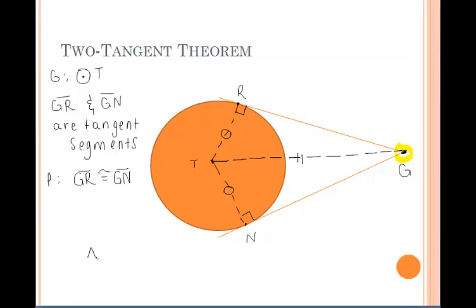We know that any time we draw a radius to a point of tangency, we have right angles that form there, which then means that these two triangles, NTG and RTG, are congruent by the HL postulate. Therefore, we can say that segments GR and GN are congruent by CPCTC.